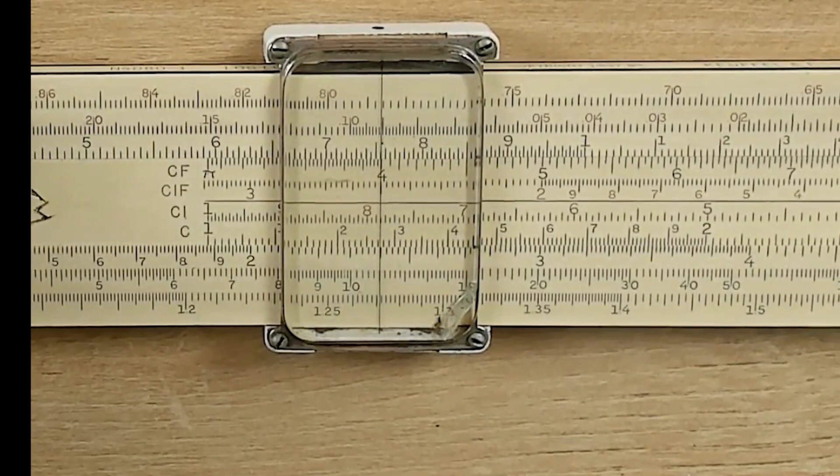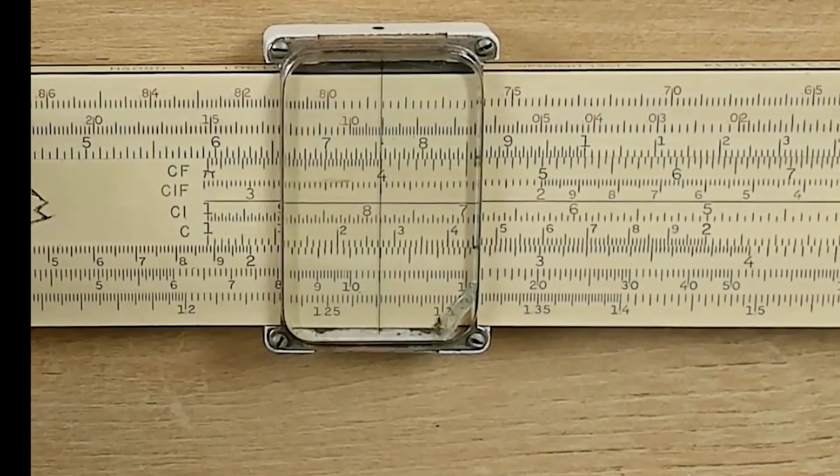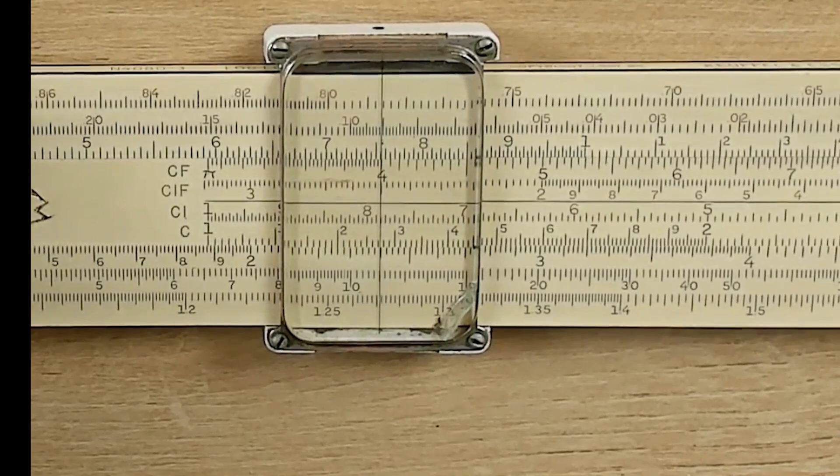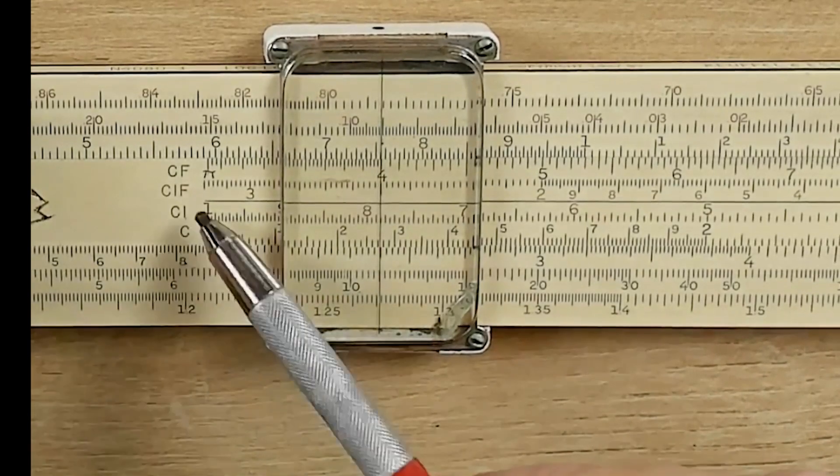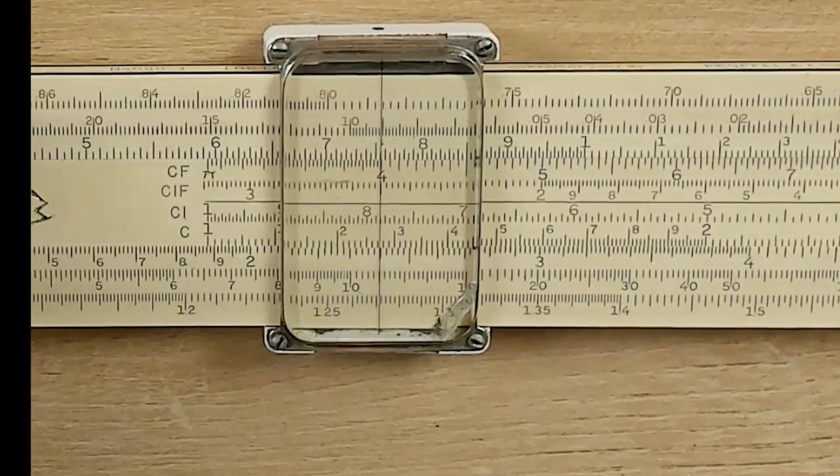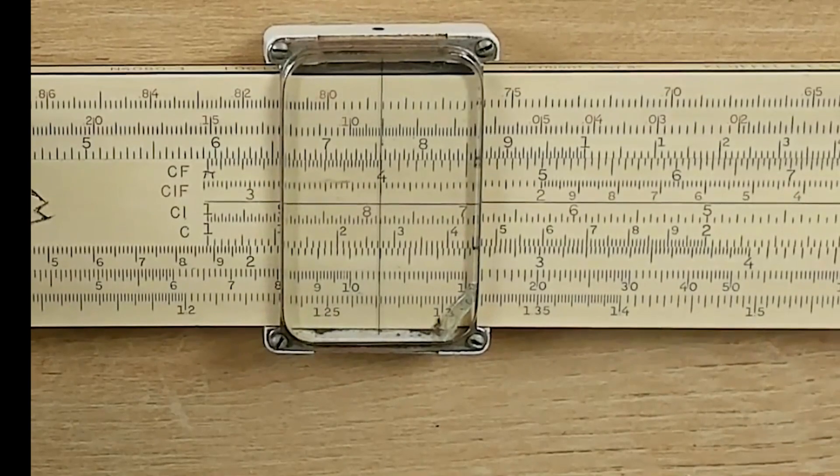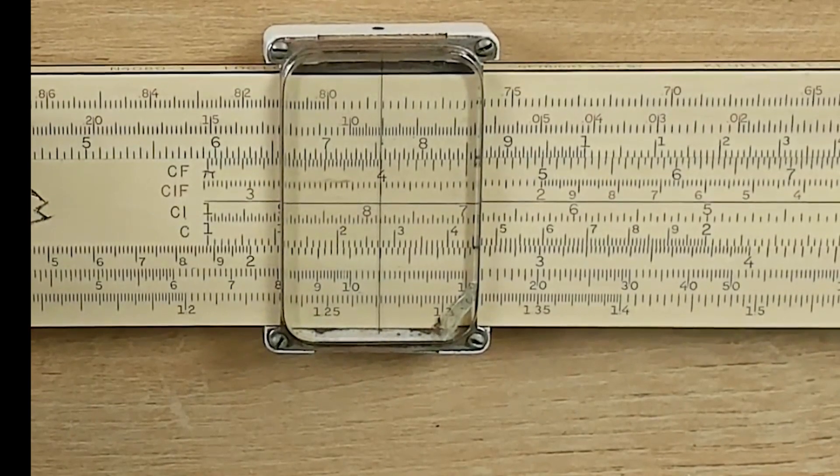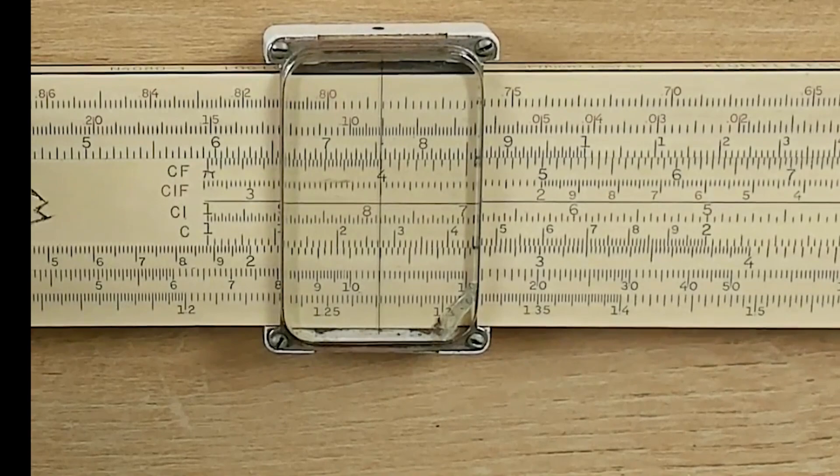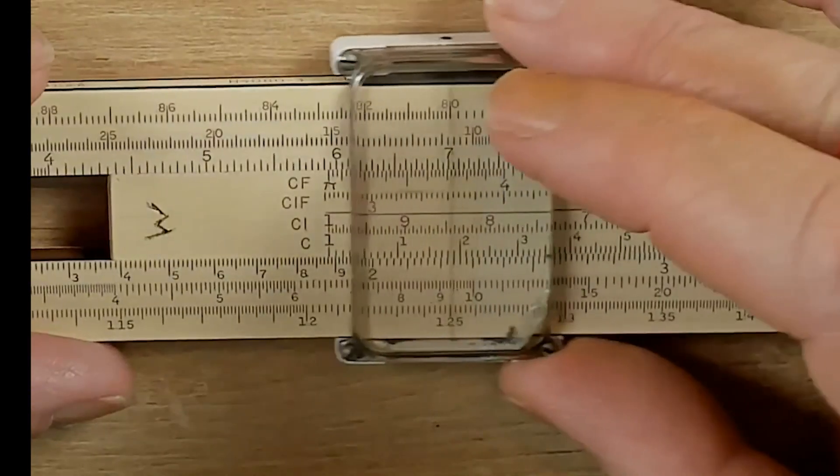Now, why would you do this? Well, if it's more convenient for the calculation that you're using to use the CI or the CF scale, well, that's the scale that you want to use. Now, the other thing that's very handy is you can do something called tables on slide rules. So, let's go to a table here.